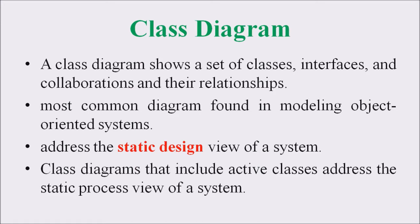The most common diagram found in the modeling of an object-oriented system is a Class Diagram, and this Class Diagram addresses the static design or view of a system. The Class Diagram that includes the active classes addresses the static process view of a system.